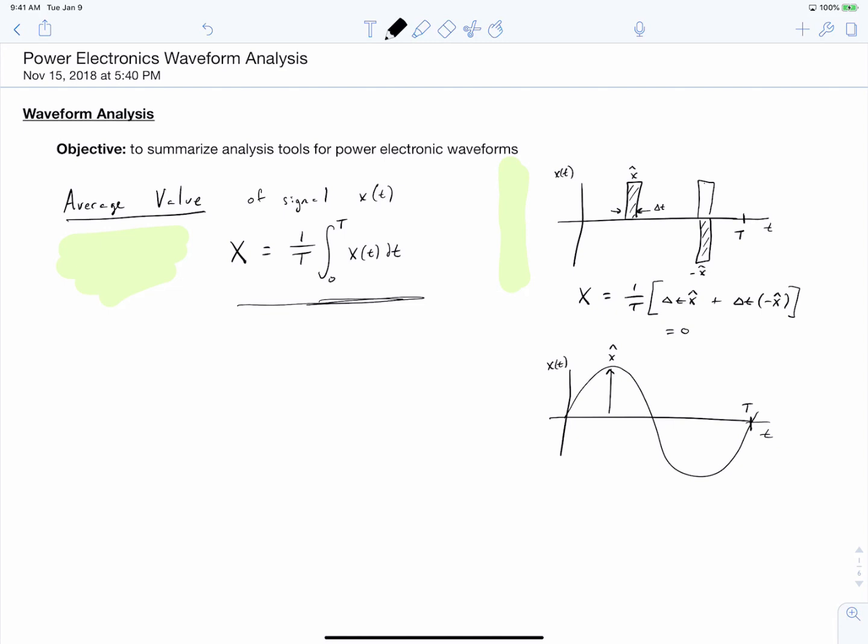So clearly this has an average value of zero. However, if we were to change this waveform so that both pulses are positive, we would then have a non-zero waveform. This would be positive, and we would have a value of 2 delta t over t, x hat.